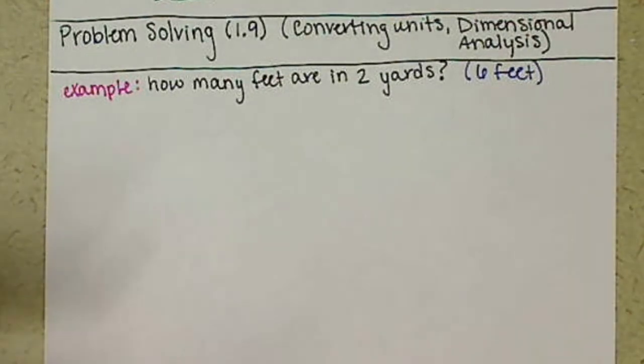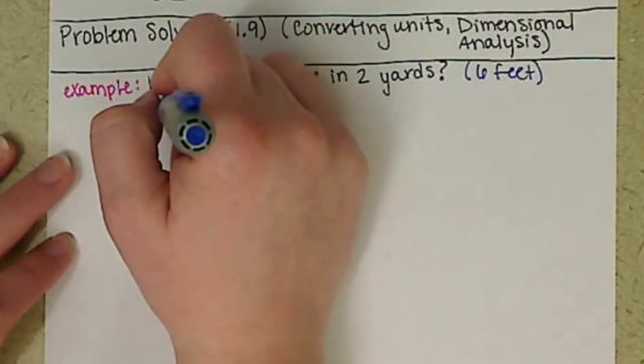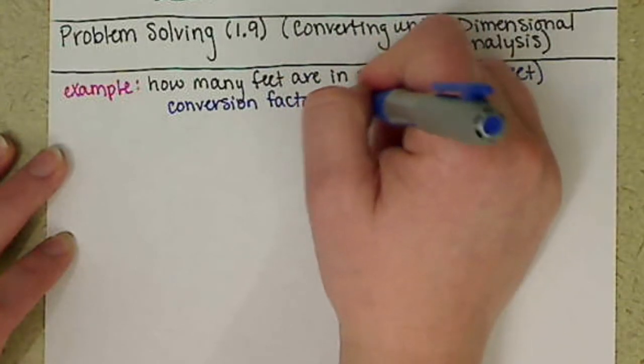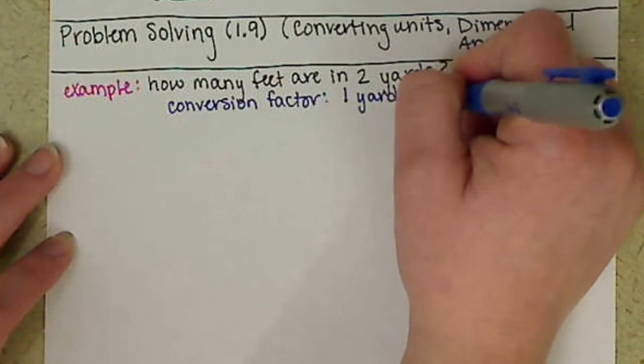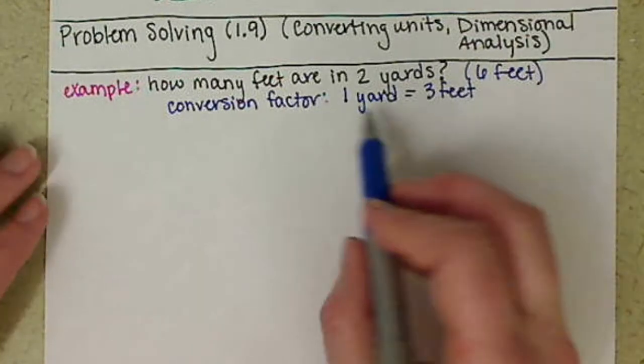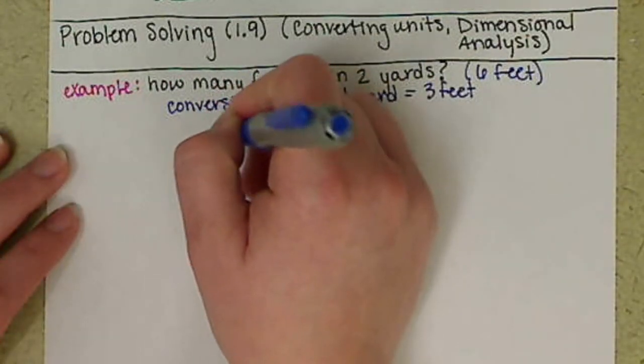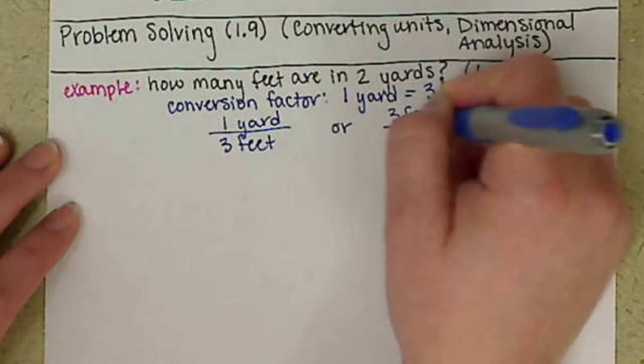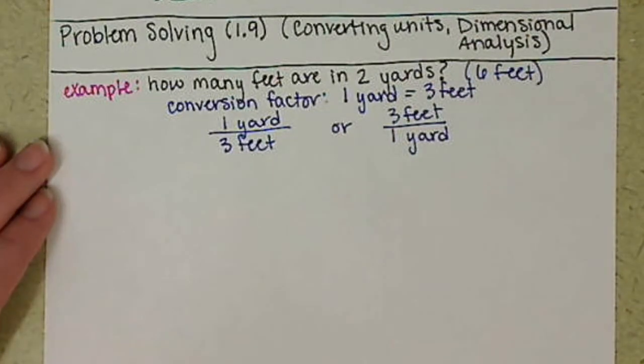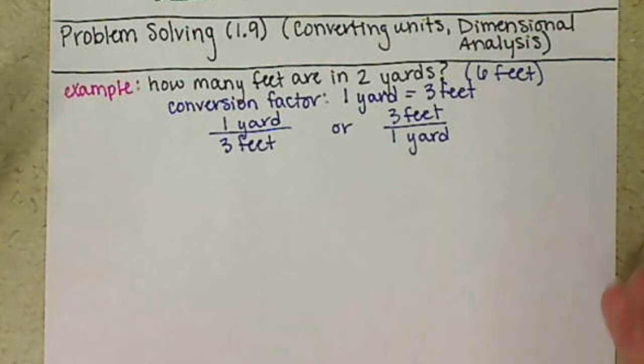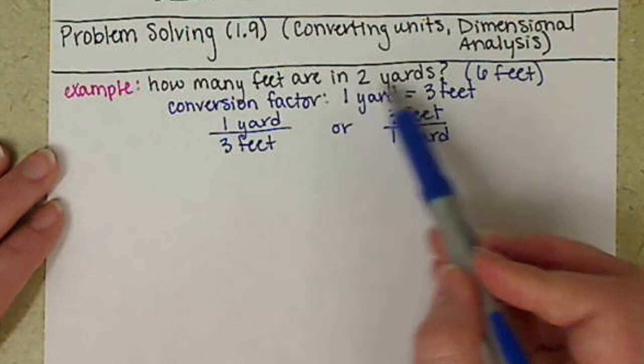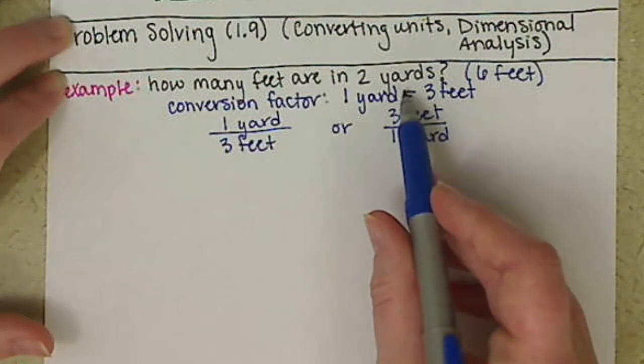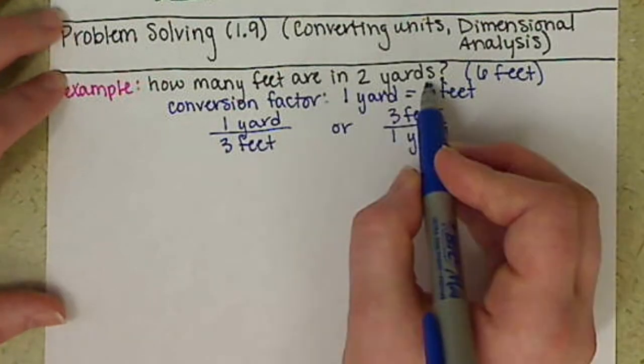First off, the conversion factor that you used was that you know in one yard we have three feet. Technically, your book calls this an equality. The conversion factor really is where we'd have one yard per three feet or three feet per one yard. This is the conversion factor, the equality that you use to do this calculation. You said you had two yards, and for every one yard you have three feet, so you have six feet.